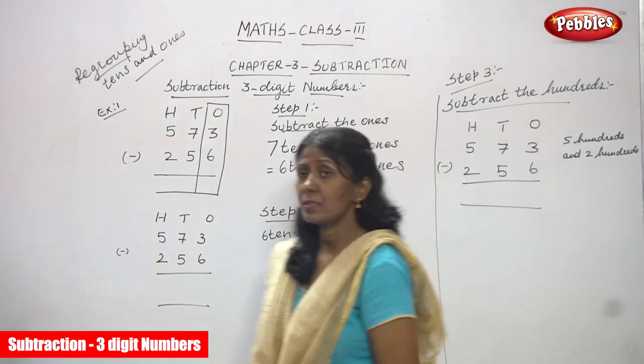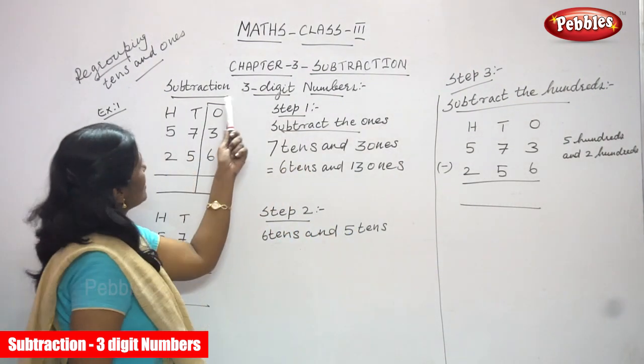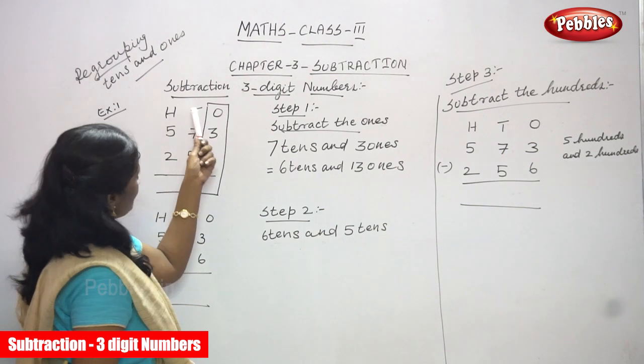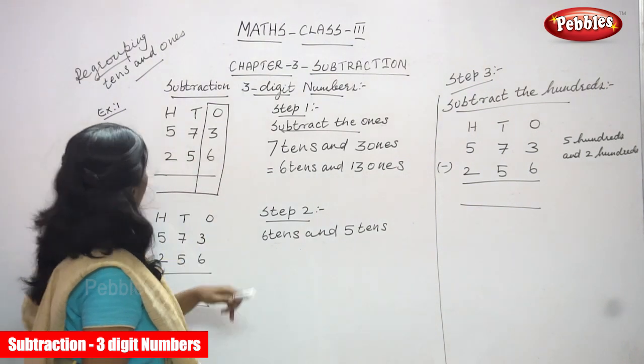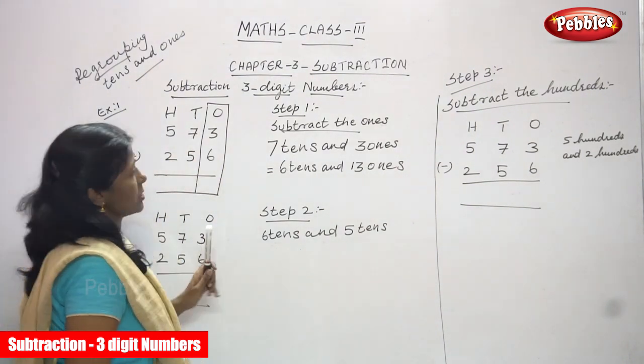Okay, now listen. We are going to see 3-digit subtraction — subtraction of a 3-digit number, but it involves regrouping the 10s and 1s.